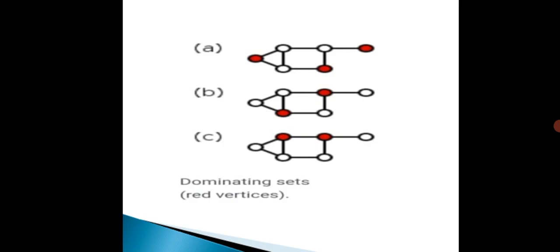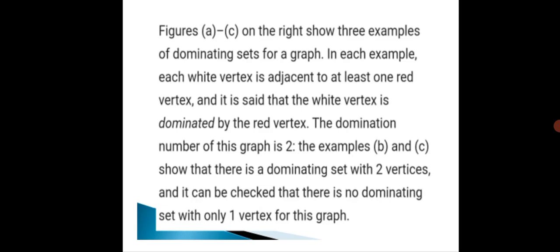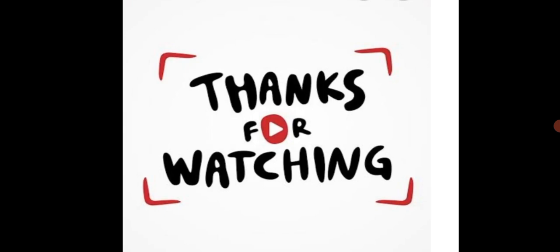So we conclude that the domination number is 2. This is called vertex domination. Thank you for watching.